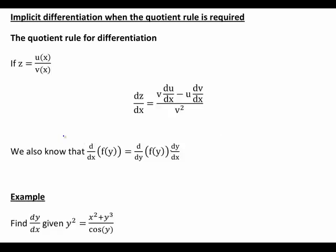Another useful thing to recall for implicit differentiation is that if we differentiate a function of y with respect to x, it's actually the derivative of that function with respect to y, times dy/dx. With these two things in mind, let's look at an example of using implicit differentiation along with the quotient rule.